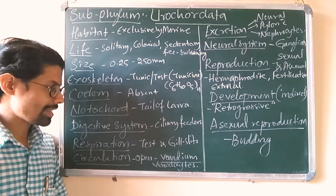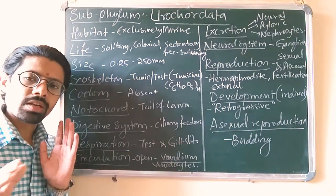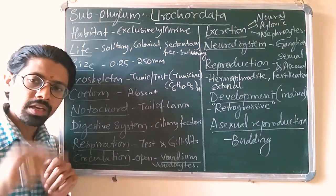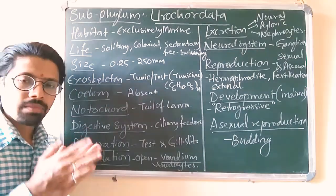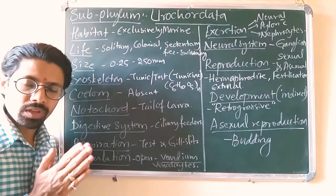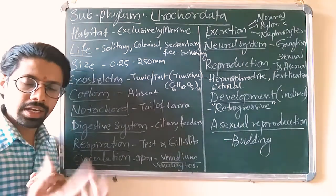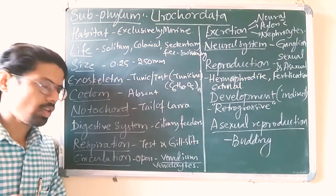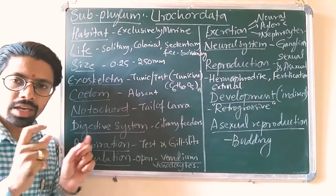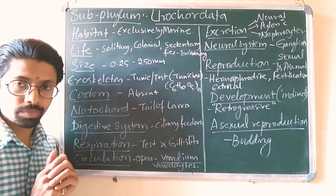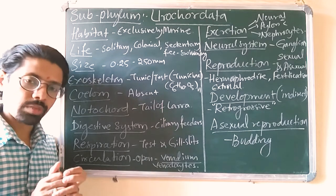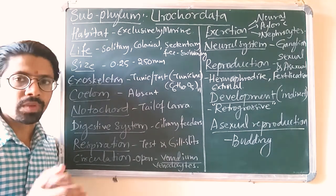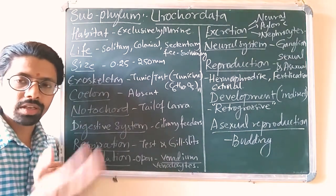If you talk about the digestive system, the alimentary canal is completely developed. It may be a straight alimentary canal or a U-shaped alimentary canal. They have numerous gill slits with cilia — ciliated slits — because they are ciliary feeders in nature. The alimentary canal is complete, with mouth and anus as separate apertures. Respiration occurs through gills or the test — the outer membrane — so some animals use the test as a respiratory organ and some use gills.